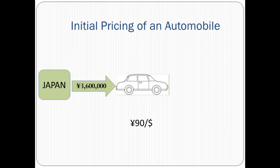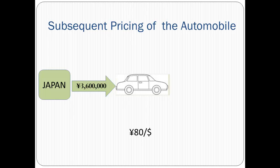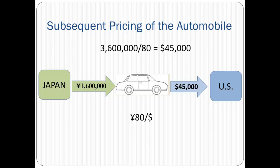Let's assume that an automobile is being exported from Japan for three million six hundred thousand Japanese yen, when the exchange rate is 90 yen per dollar. This means that the dollar price of the automobile is $40,000, so the US importer would pay $40,000 for the automobile. Assume that a year later the exchange rate is 80 yen per dollar, so the automobile will be imported into the United States at $45,000.